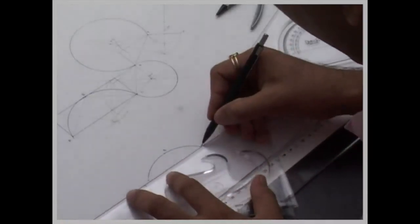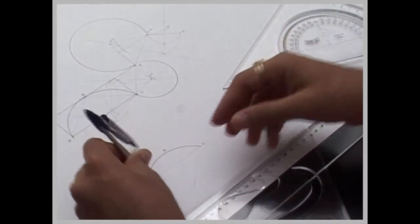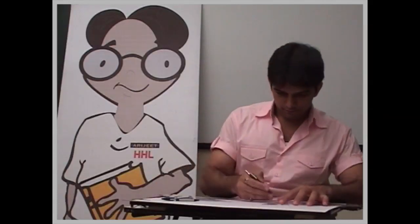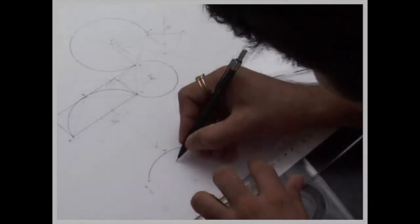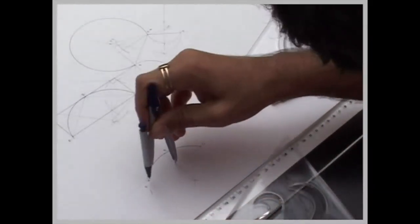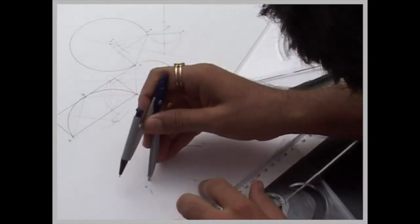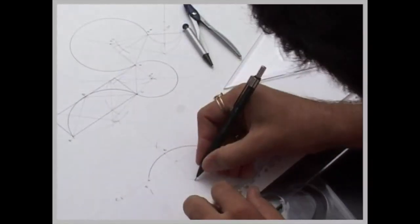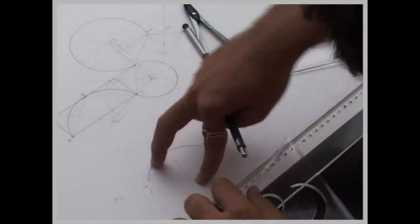First you will join e to c and extend the line. Then you bisect ac. You take this distance. You take O2 to a, cut on this side - that is point n. This is point p. So from point p we have drawn arc abc.